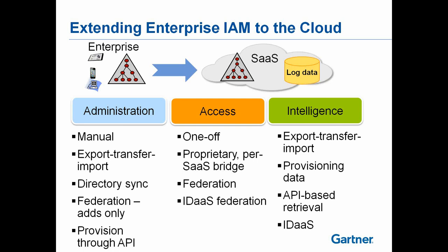Directory sync is pretty common for the CRUD operations — create, read, update, and delete — up to the cloud. Occasionally, SaaS vendors open up an API that can be used for programmatic provisioning. On the access side, in the early days SaaS vendors under pressure from enterprises would give them a proprietary shim that they could integrate with a directory.